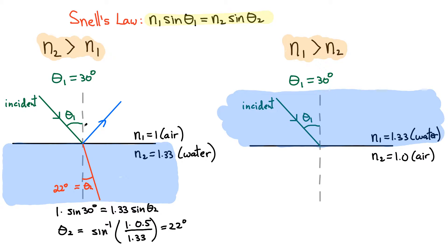You're always going to have a bit of light that is reflected, so let's not forget that ray. In this case, we know the reflected angle is also going to be 30 degrees. One specific case where there is no refraction is if the incident angle is zero degrees — sine of zero gives sine of theta 2 equal to zero as well.